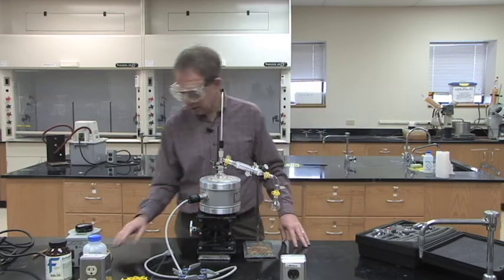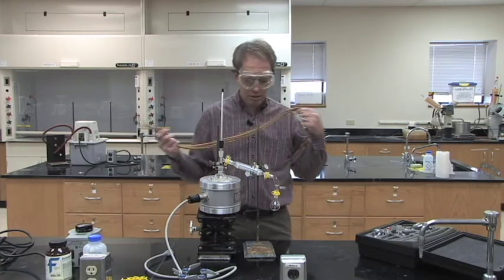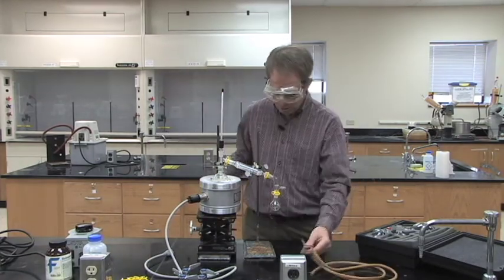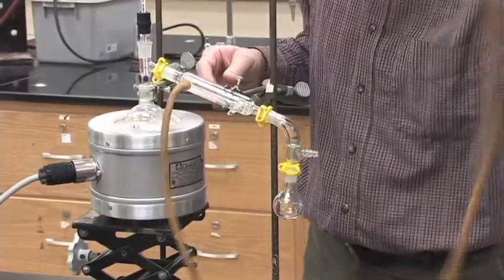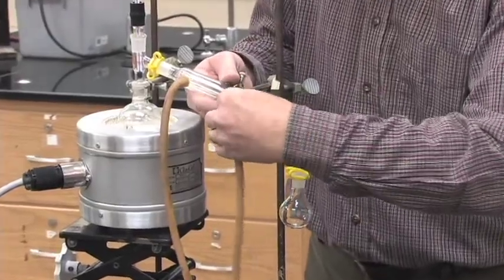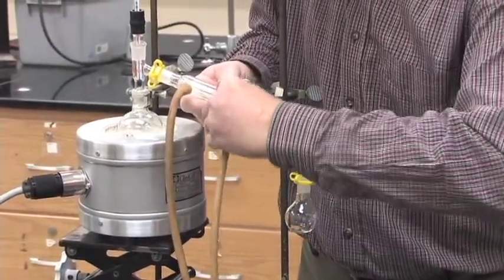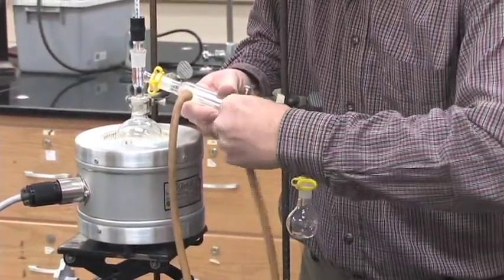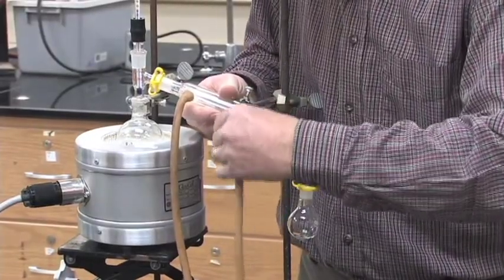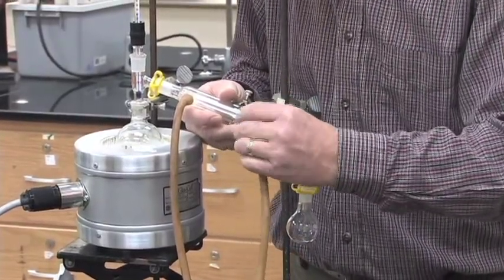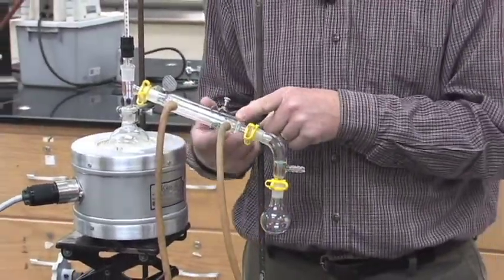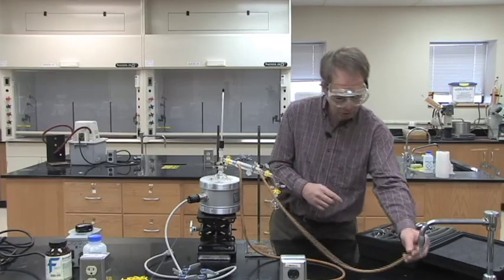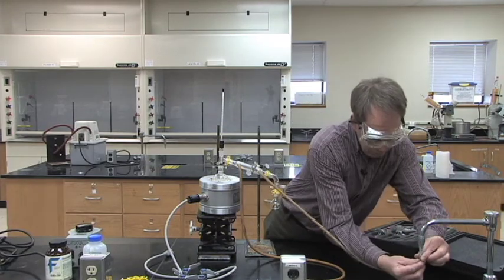Now when we do a distillation, we need to have hoses sending water into our condenser. Push the tubes on as far as you can on both of the ends of the condenser. Make sure they're on good and tight so they don't fall off. And then what you'll do is the lower end of the condenser will be the hose that goes into the faucet.